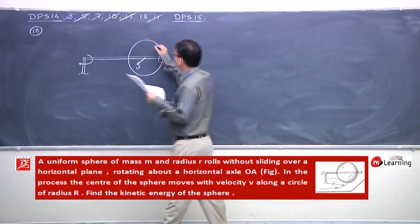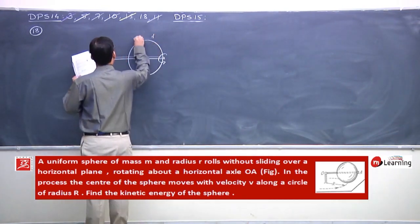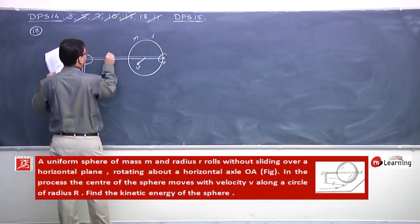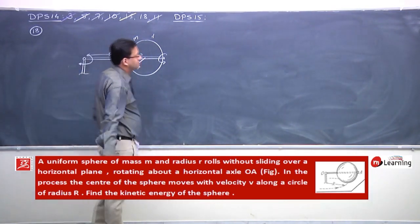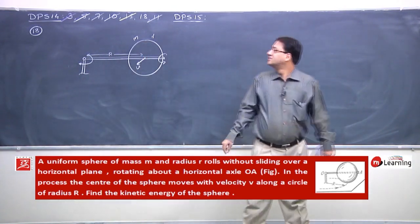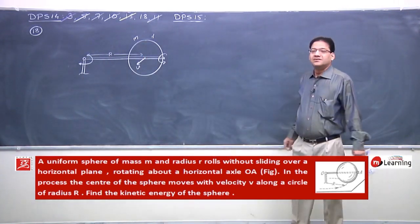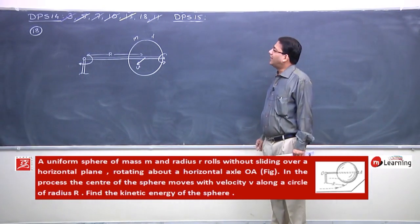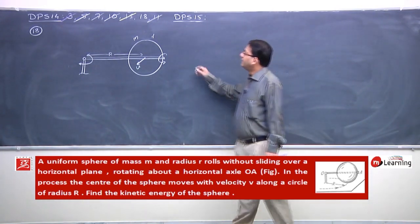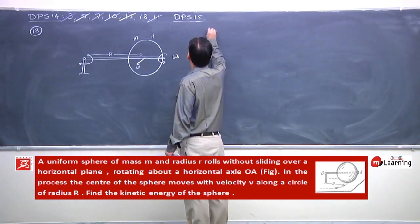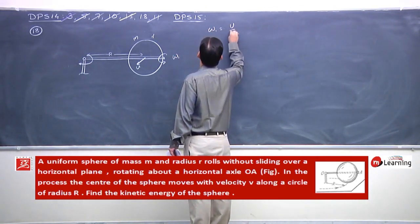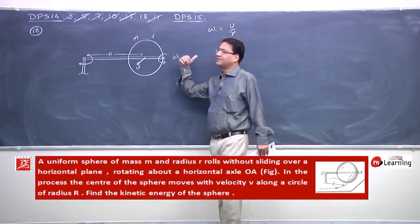Sphere ka radius small r hai, mass m hai, aur yahan se yahan tak radius capital R hai. Do axis ke about rotation ho raha hai. Ek to is axis ke about omega 1, where this omega 1 is v by r.